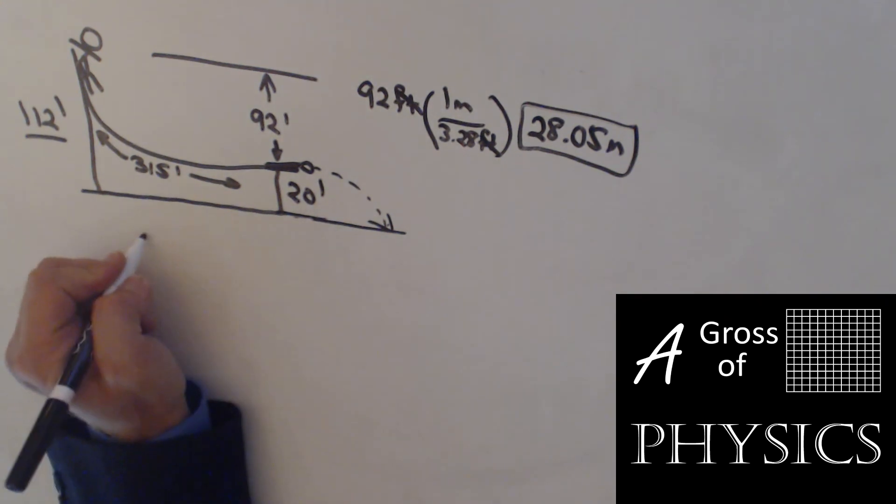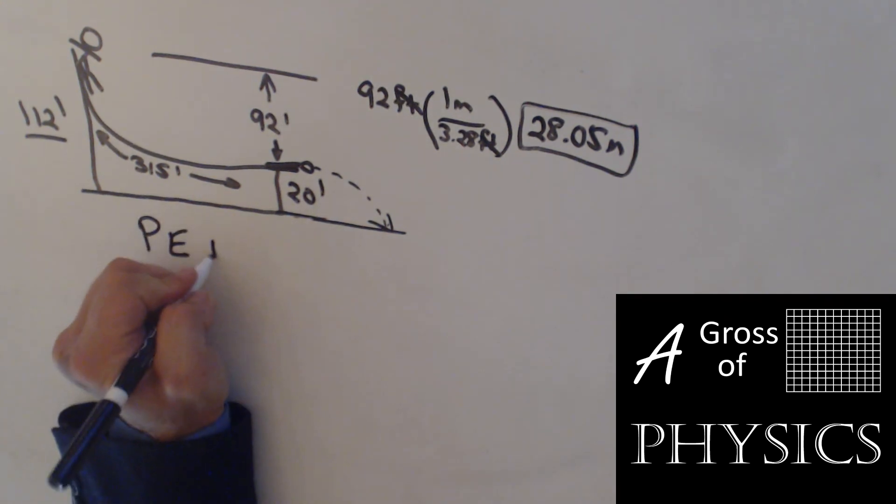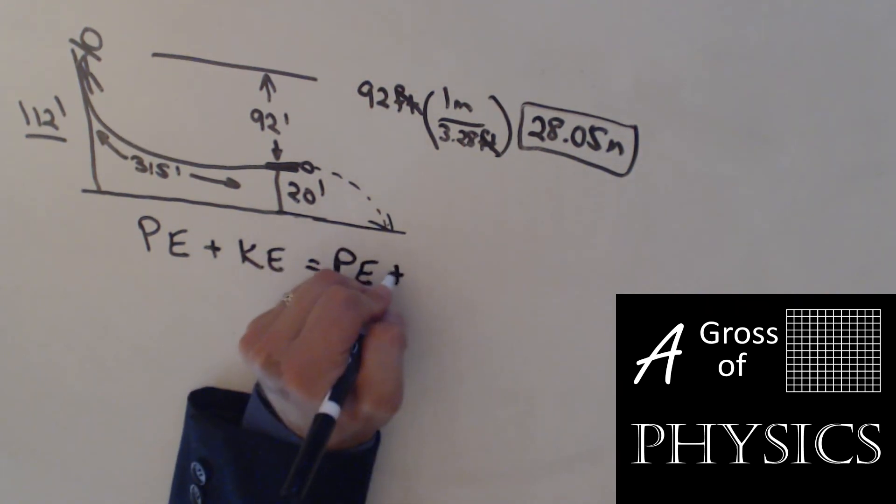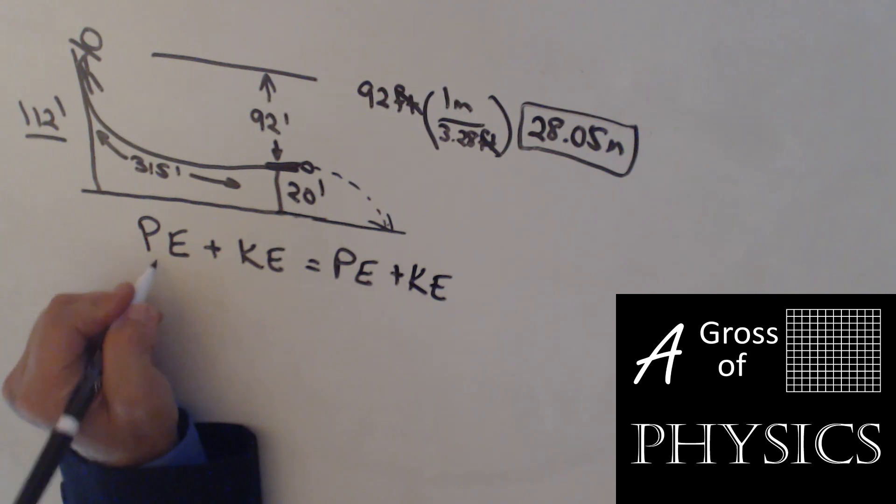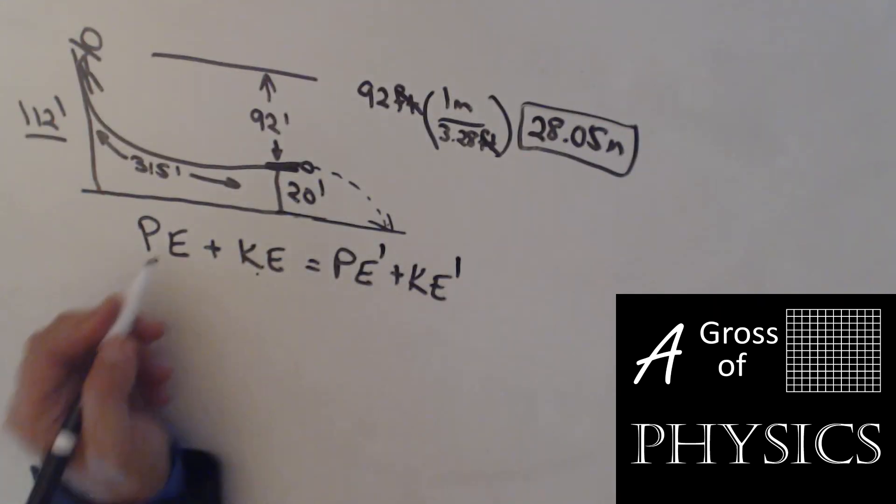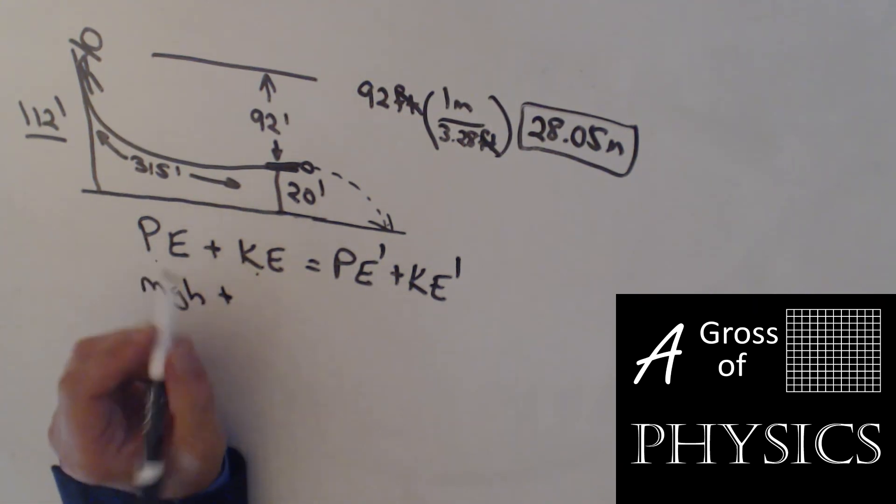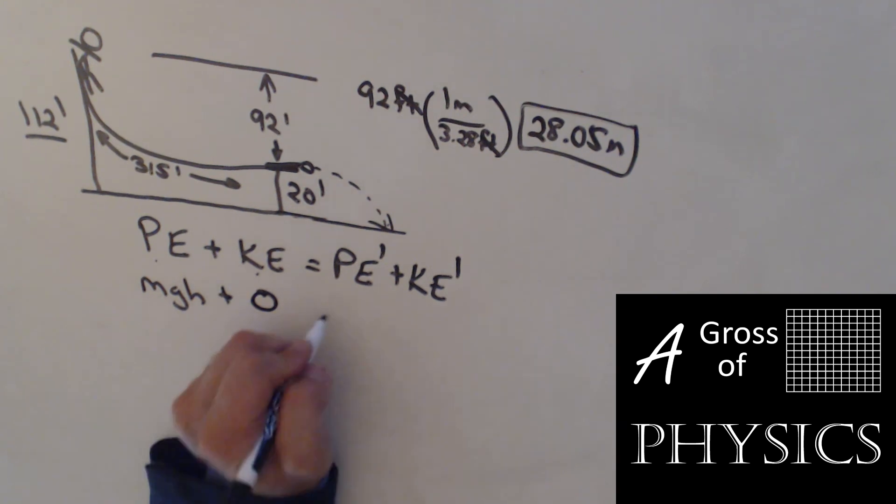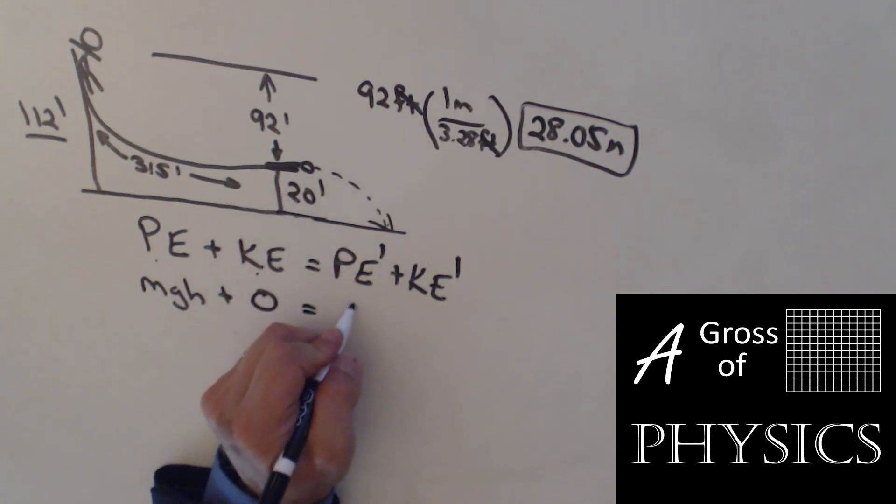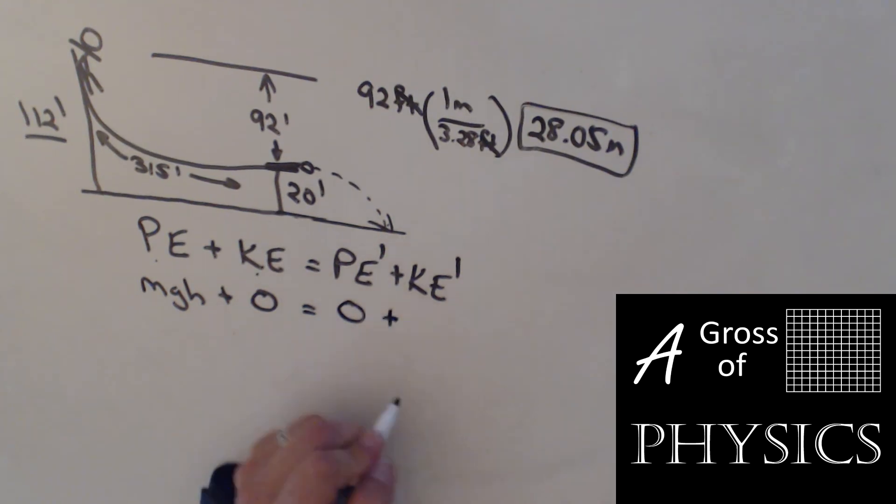Now, what type of energy do we have at the top? Our equation is PE + KE equals PE + KE. This is the initial side, and this is the final side. Now potential energy at the top, mgh, plus the kinetic energy if they're standing still is zero, equals potential energy at the bottom, if that's my zero point, is zero, plus one-half mv squared.